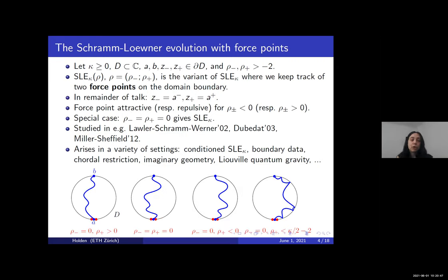The force point will be attractive if the parameter rho is negative, and repulsive if rho is positive, as illustrated in the figure. In the left figure, rho-minus equals zero and rho-plus is positive, so the curve is pushed away from the right boundary arc. In the second figure, both rho-minus and rho-plus equal zero, giving a regular SLE. In the third figure, rho-plus is negative, so the curve is attracted toward the right boundary arc. In the fourth figure, rho-plus is less than kappa over two minus two, and the attractive force is so strong that the curve hits the right boundary arc.